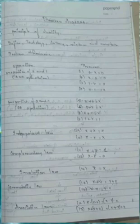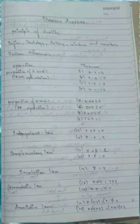You can get the principle of duality for two marks, then define tautology, fallacy, min term, and max term — this too you can get for two marks. Then there will be a two-mark question like state and prove a theorem, such as complementary law, involution law, cumulative law, associative law, and distributive law. You have to state and prove those theorems.